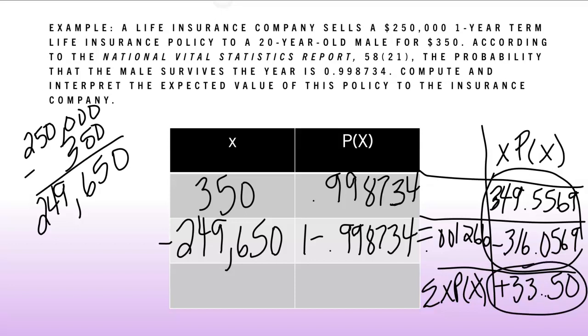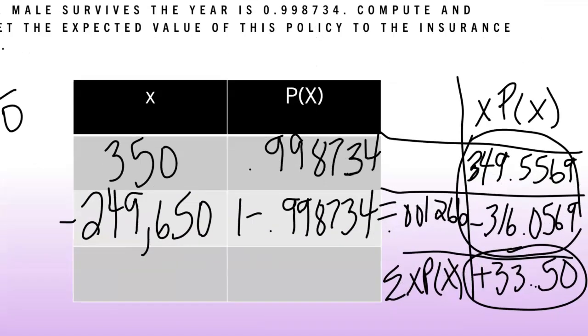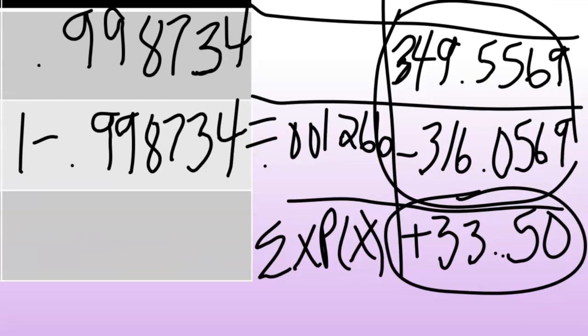So what does that mean? That means if the company sells many of these policies to 20-year-olds, then on average, they will make $33.50 per policy. So that's what they'll make per policy on average. Now, if you're interested in this type of work, then you might want to look into the field of actuary.